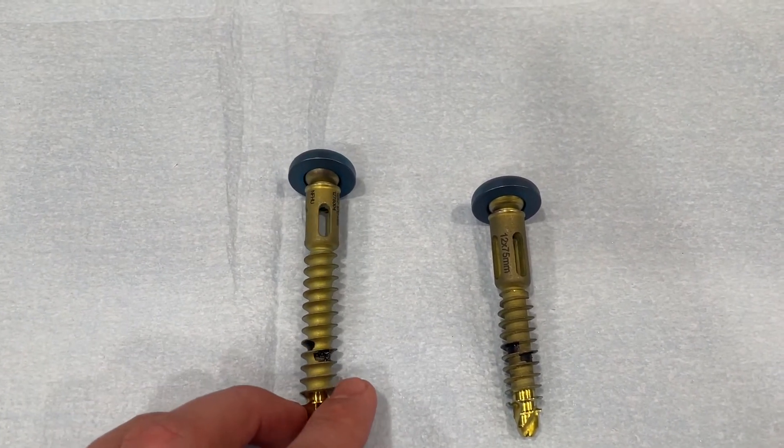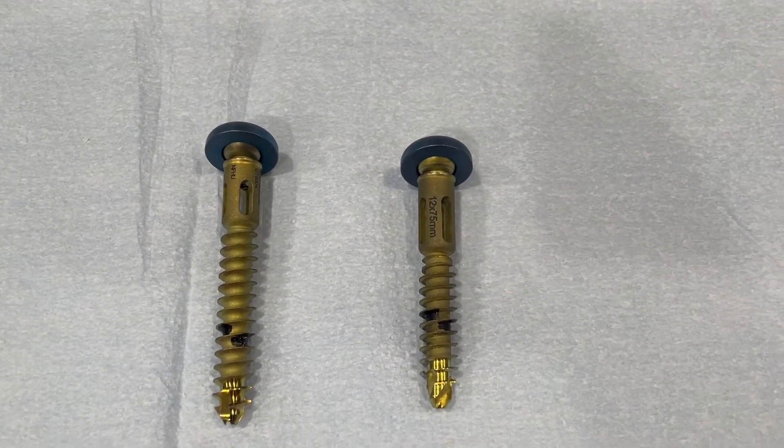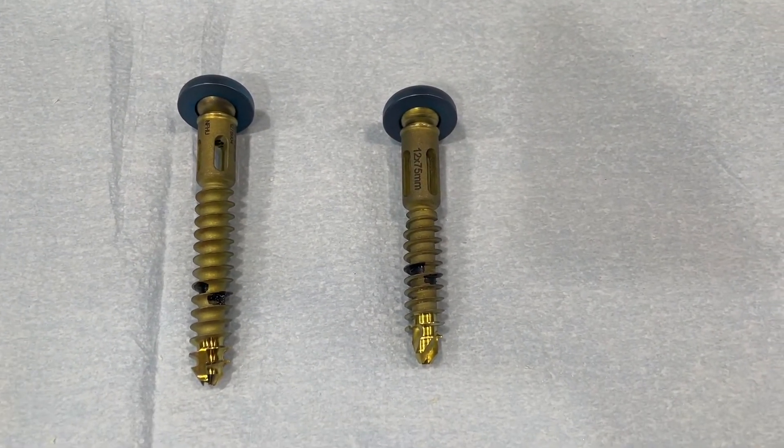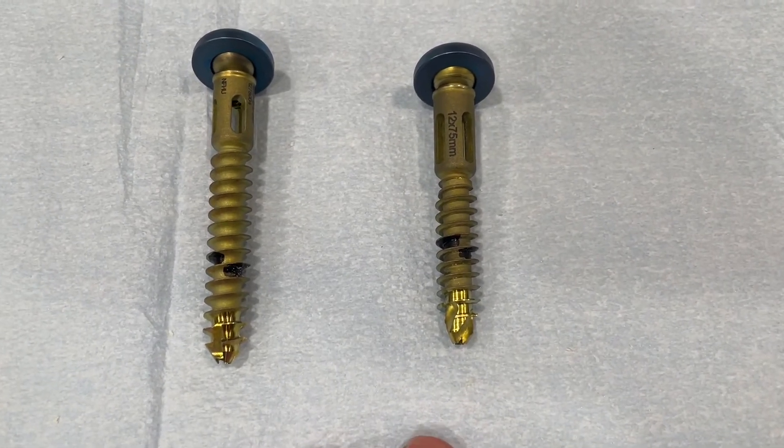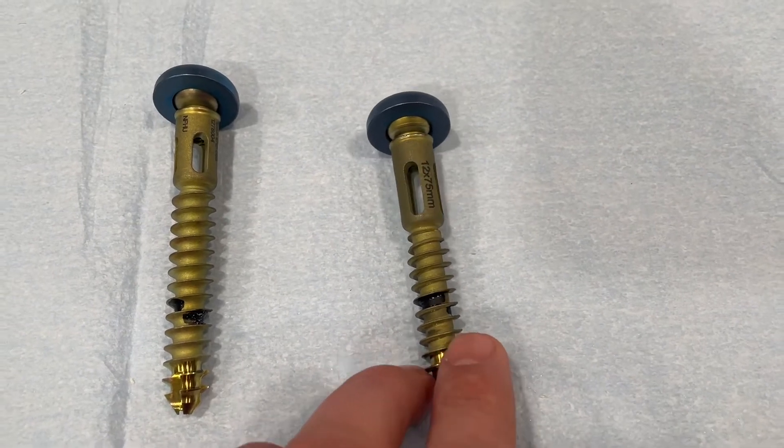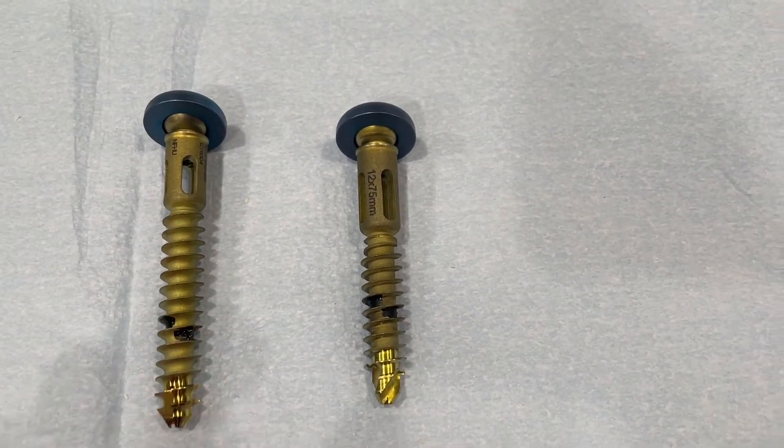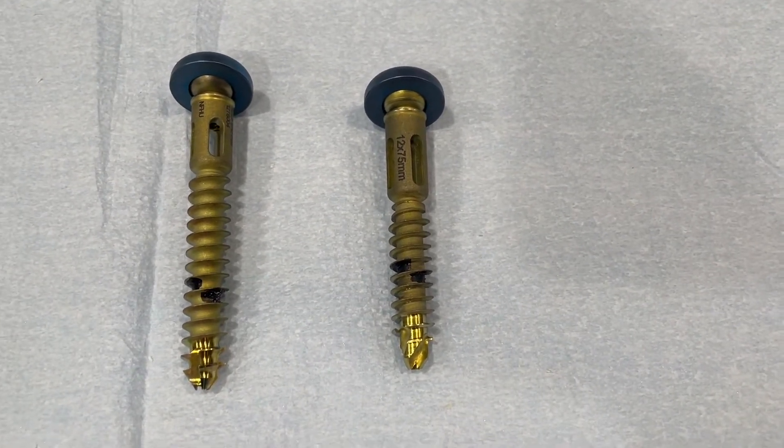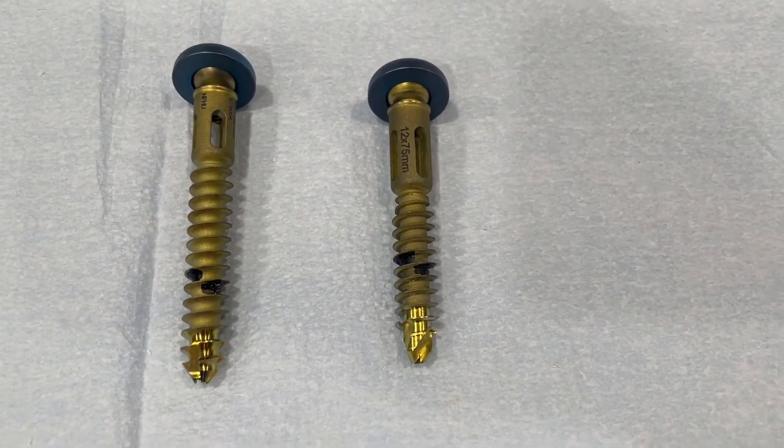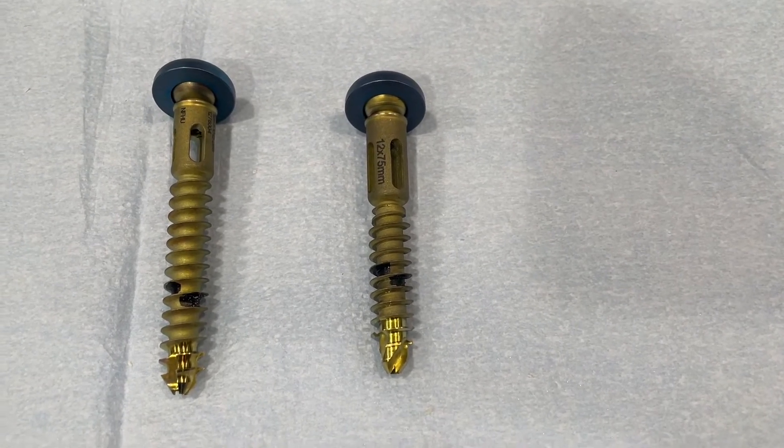The implant on the right utilizes a proprietary thread known as UniFi MI. MI stands for mechanical integration. The way this works, there's proprietary undercuts on this thread that allow this to mechanically lock into the bone, and it's the first new method of securing an implant to bone since the discovery of osseointegration in the 1980s.